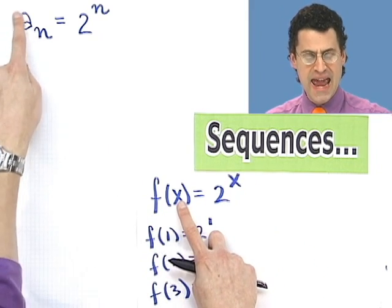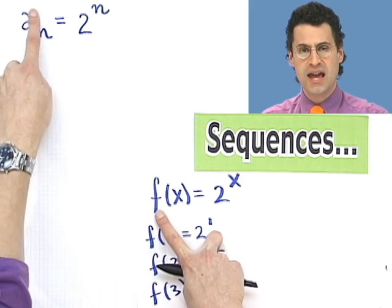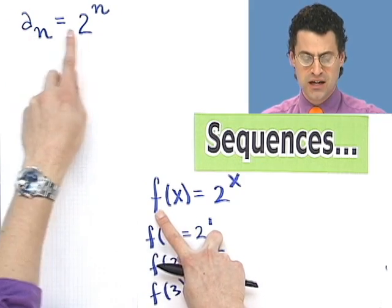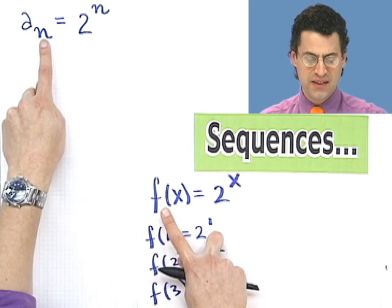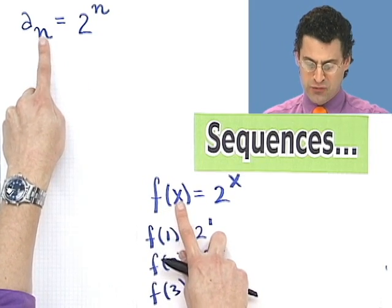Here, to translate that, a is sort of like the f here. a is telling me that this is the 2 to a power thing. And this little index here, this n, represents the variable.